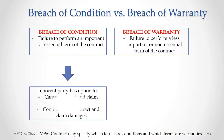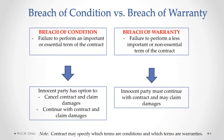With a breach of condition, the innocent or non-breaching party has the option to do one of two things: that party can walk away from the contract, cancel it, and claim damages; or they can still continue with the contract but still have the right to sue for damages from the breaching party. With a breach of warranty, the choices for the innocent party are much more limited — the innocent party has to continue with the contract, but does have the ability to claim damages from the breaching party.